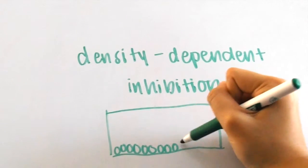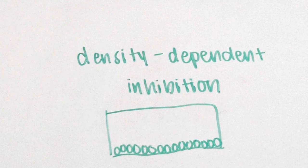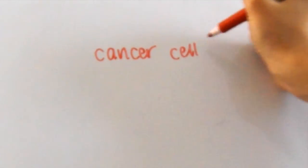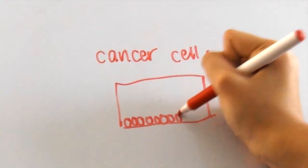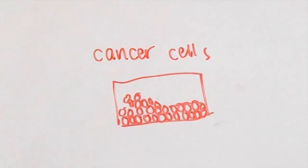As you can see in this diagram, normal cells will stop dividing once the space they are anchored to is filled sufficiently. However, in this diagram with cancer cells, they exhibit no density-dependent inhibition and still keep dividing no matter what.